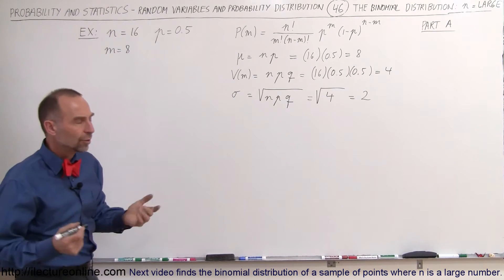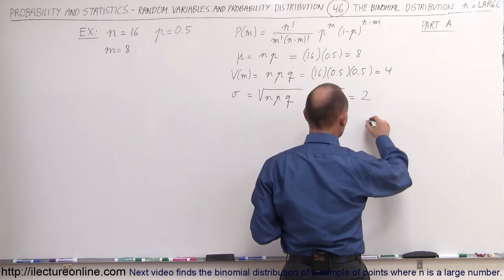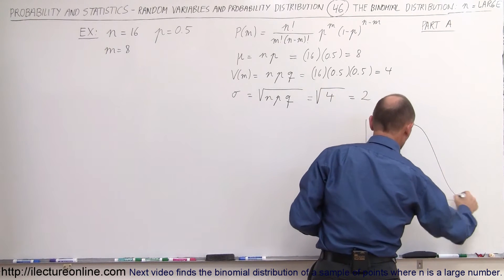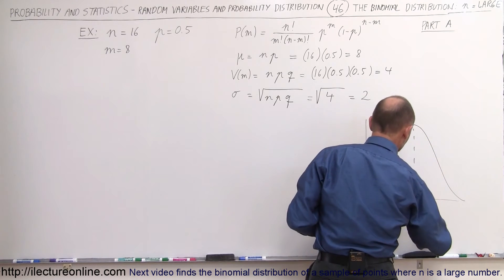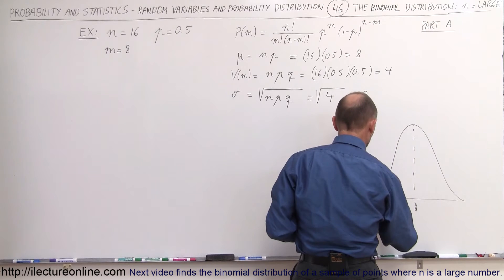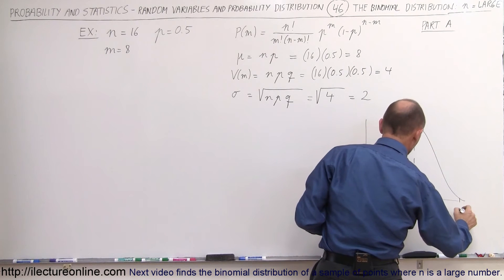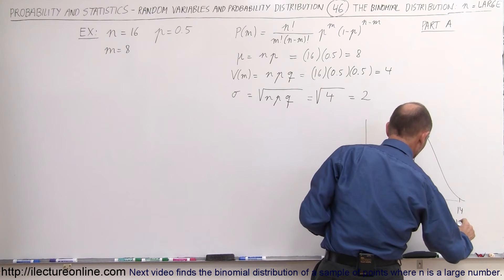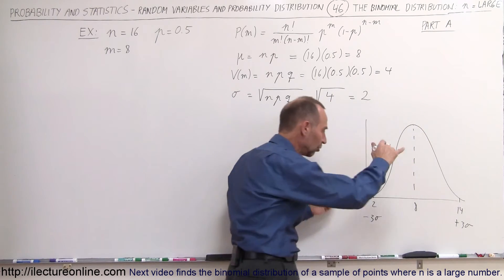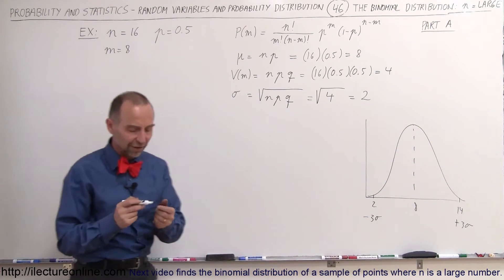When you think about trying to graph what that probably looks like, it'll probably look something like this. The expected value is 8, and you expect almost down to 0 when you get down to 2, and almost down to 0 when you get to 14, because this is plus 3 sigma and this is minus 3 sigma. So that should contain about 99.7% of values.